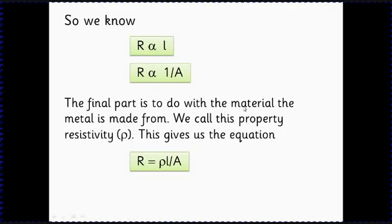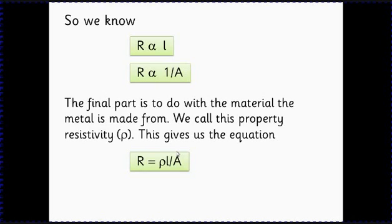We've got these two factors: R is proportional to l, and R is proportional to 1/A. To get rid of the proportional sign we introduce the property of the material — we call this resistivity, the Greek letter rho. This gives us the equation R equals rho times l over A. So the resistance of any wire is the resistivity times the length divided by the cross-sectional area perpendicular to the current. In exams, be precise — it's not just 'area' but the cross-sectional area perpendicular to the current.